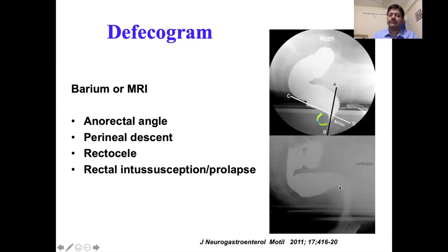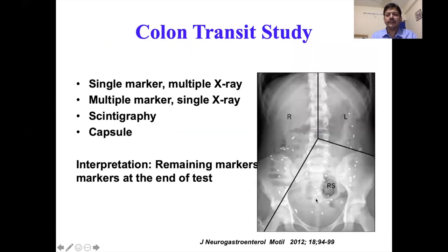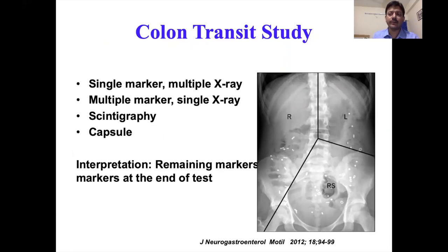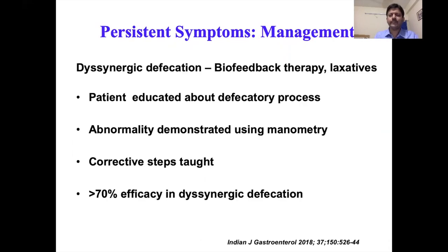In dyssynergia, instead of the anorectal angle increasing, it becomes more acute. This is a typical finding of dyssynergia — a reduction in anorectal angle during defecation. If defecogram and manometry are both normal, we proceed to transit study to look for slow transit constipation. Techniques include marker studies, scintigraphy, and capsule methods. In our center, we use a marker study where multiple markers are ingested and an X-ray is taken; if markers retained exceed the normal cutoff, transit is considered abnormal.